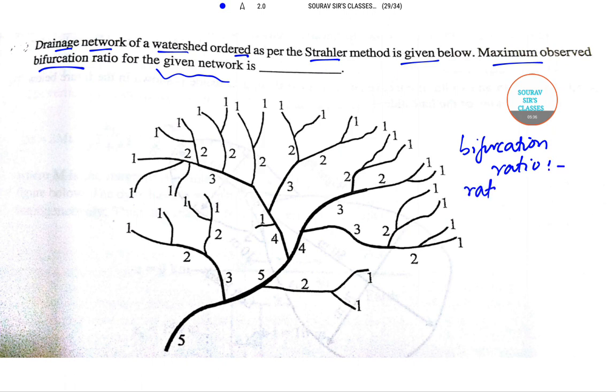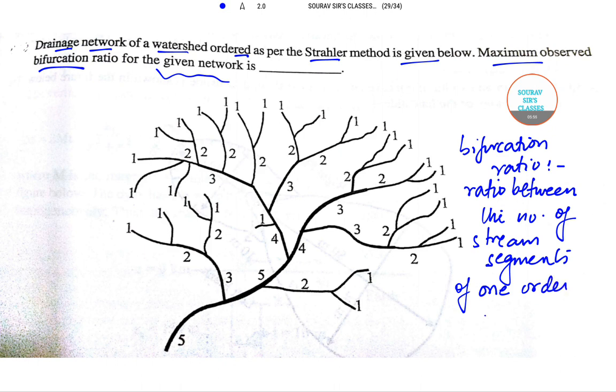Bifurcation ratio is the ratio between the number of stream segments of one order and the number of next highest order.